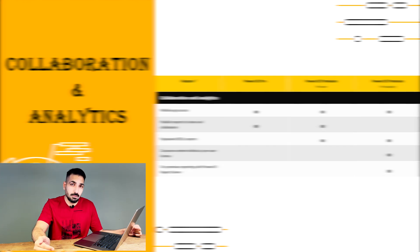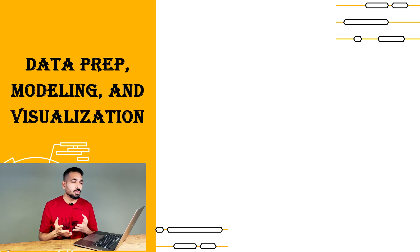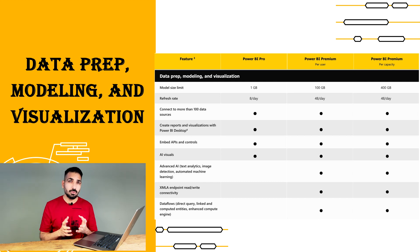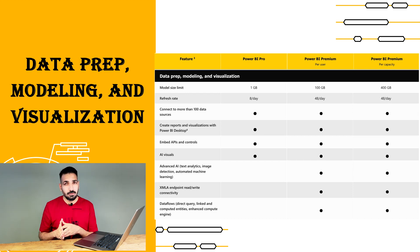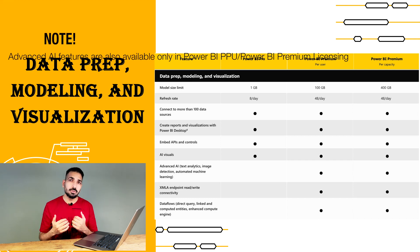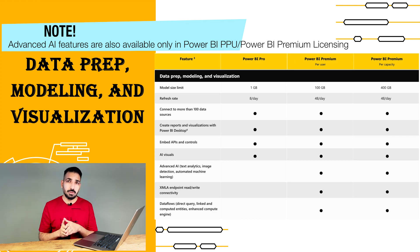The second category is data prep, modeling, and visualization. You can see on screen the different features across Power BI Pro, Power BI Premium Per User, and Power BI Premium Per Capacity. Two distinct features you only get in Premium Per User and Premium Per Capacity are XMLA endpoint connectivity — I'll provide a link to our other video on that — and Dataflows, for which you can also find videos on our YouTube channel. All other features are available across all three licenses.